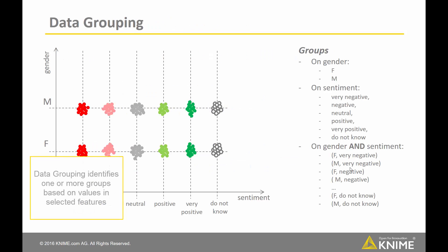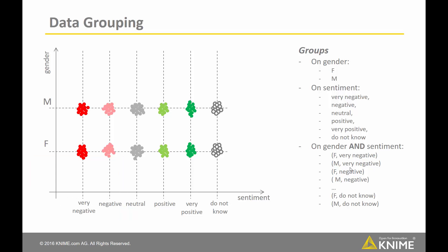Data grouping identifies one or more groups based on values and selected features. In this example, we could identify all men, all women, or all groups of people with different opinions about a given product.